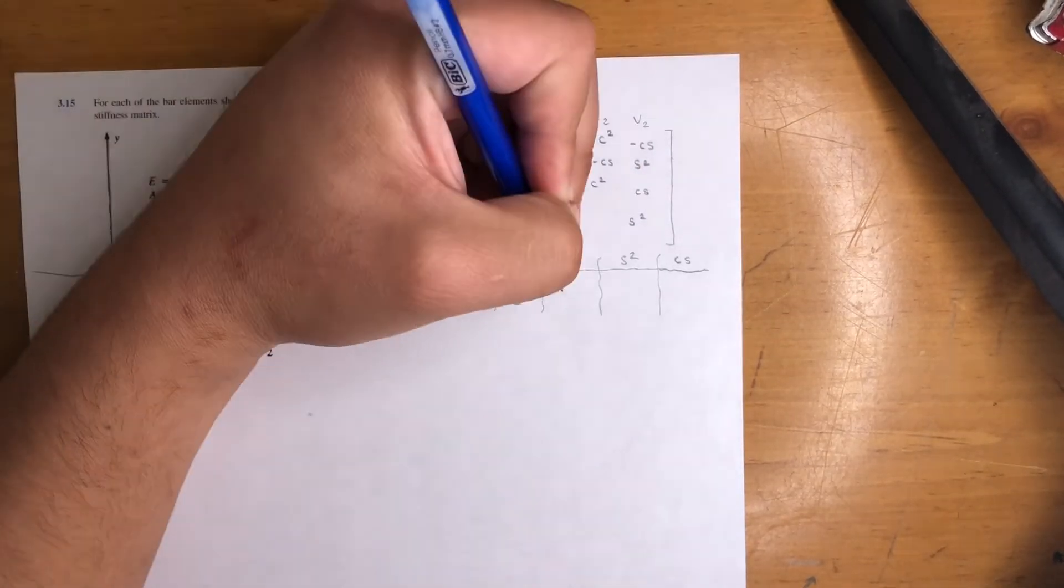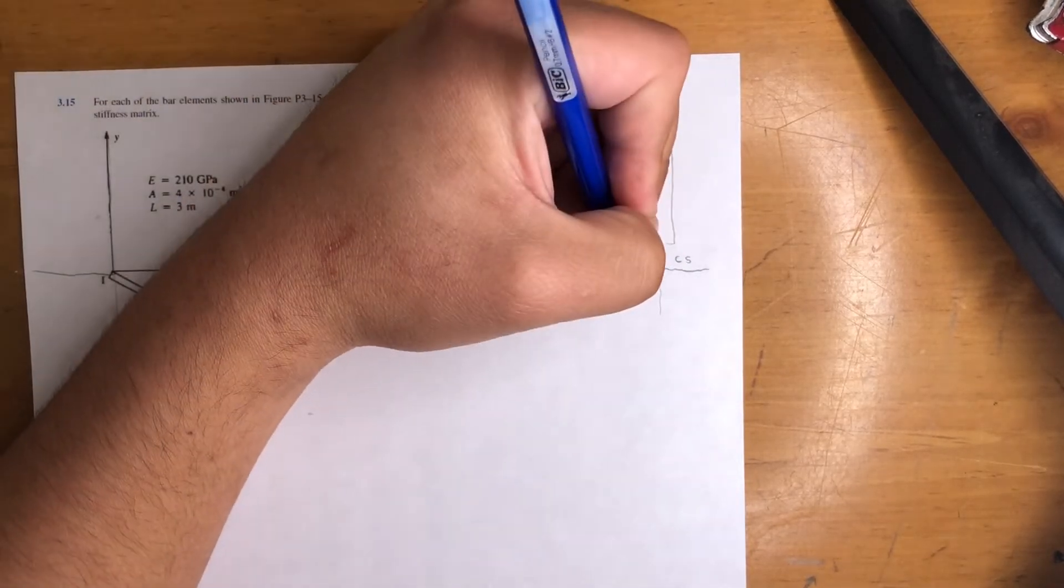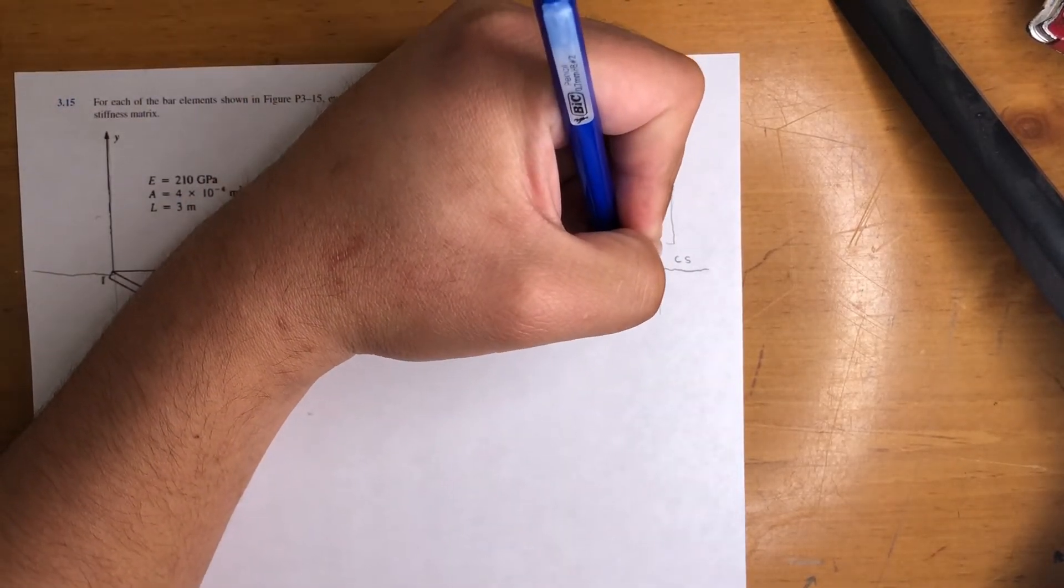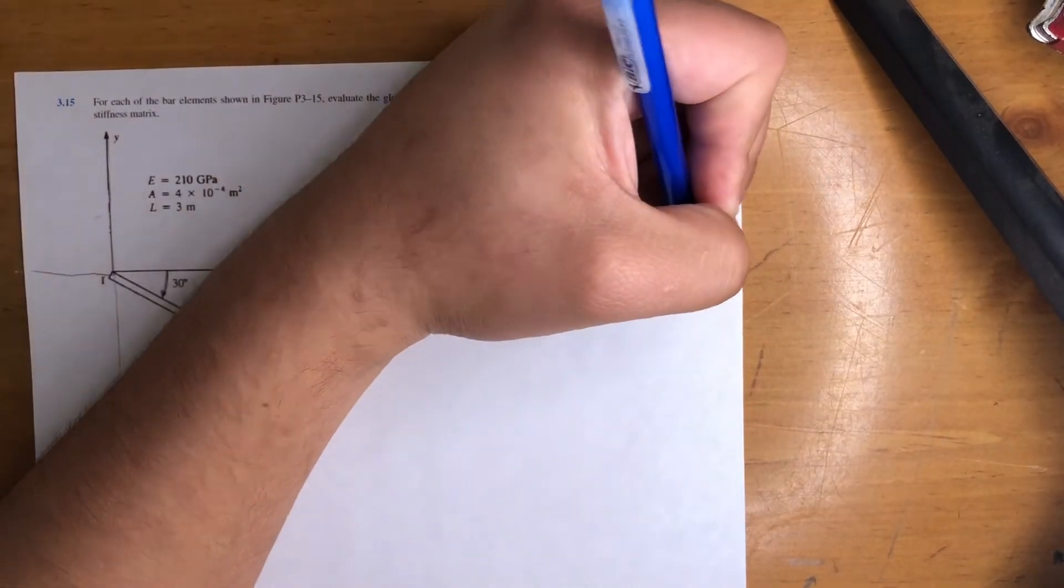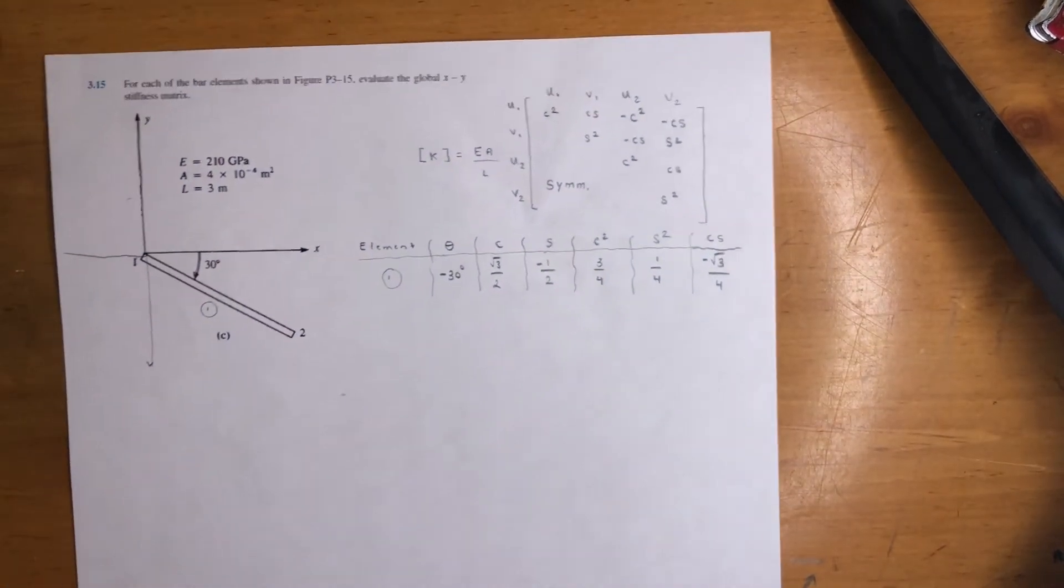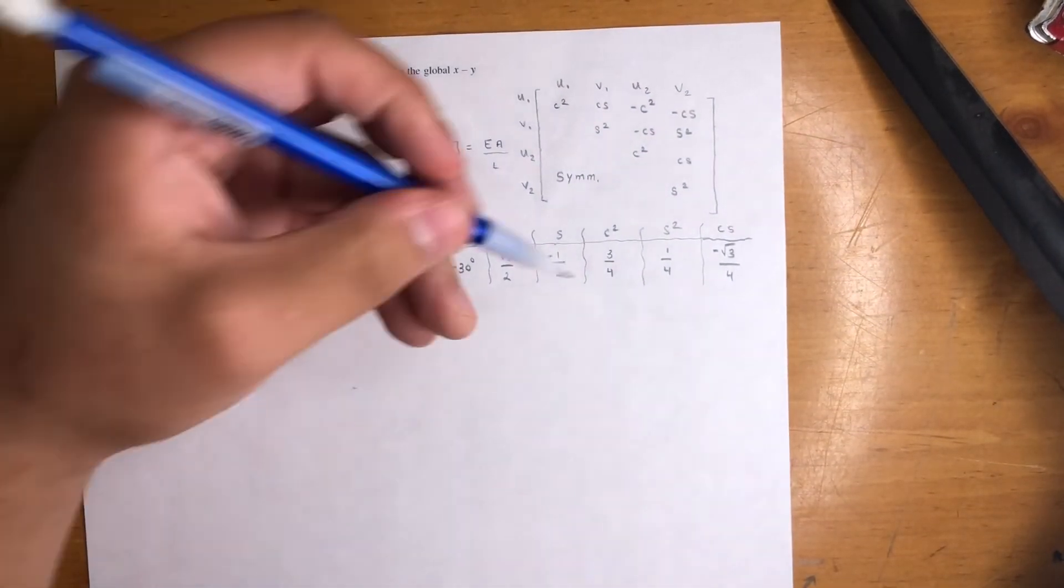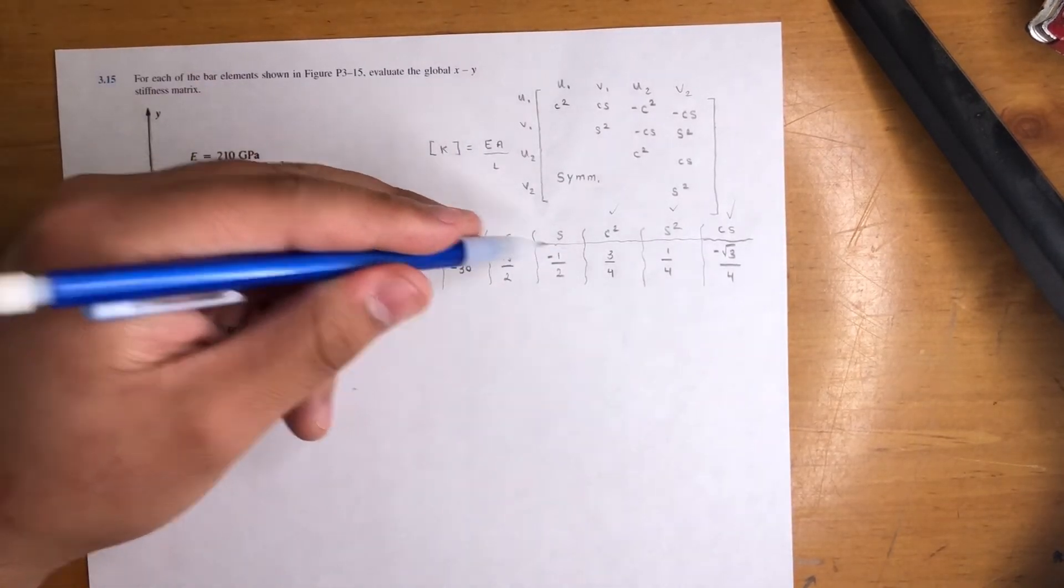Square cosine, you will get three over four. Square sine, you will get one over four. And if you multiply them, C times S, you will get negative radical three over four. And that's pretty much it. Again, we're only concerned with these three values right here. The rest is history.